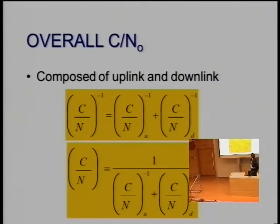Let's look at the overall C over N, composed of uplink and downlink. Let's assume we have a transponder where the signal we're sending up is just amplified and sent down. The overall signal to noise ratio is 1 over (C/N0)^-1 for the uplink plus (C/N0)^-1 of the downlink. The combination of the two is worse than the worst of the two, because we're not amplifying just the signal - we're amplifying the noise as well.